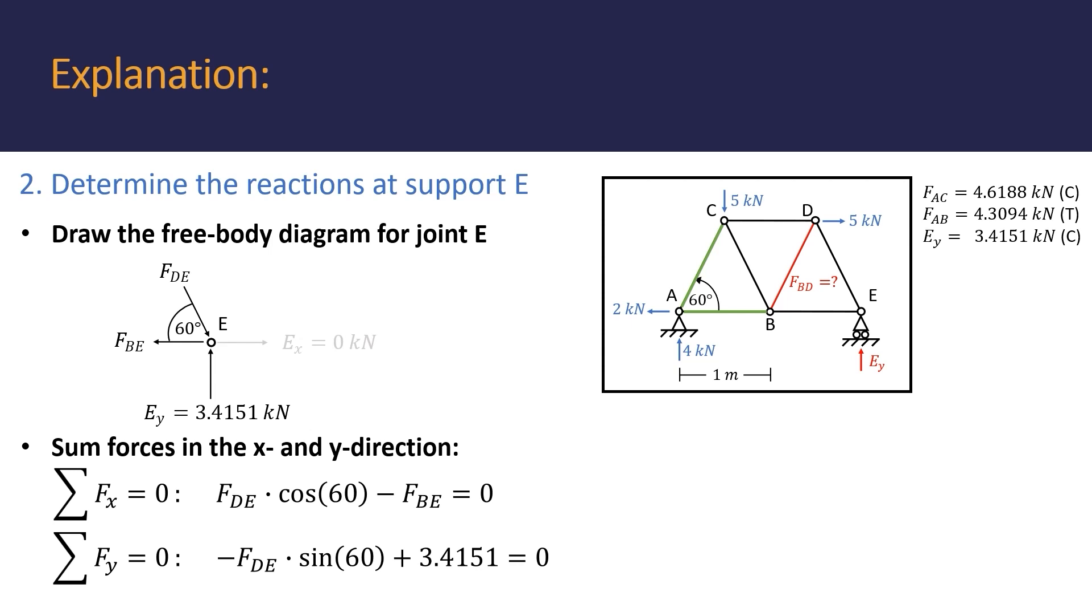The second equation now allows us to solve for the force in member DE, and it is found to be 3.9434 kN. And since this value is positive, we know that our initial assumption of compression was correct. With force DE known, we can also use the first equation to solve for force BE, and we find that it is equal to 1.9717 kN in tension.